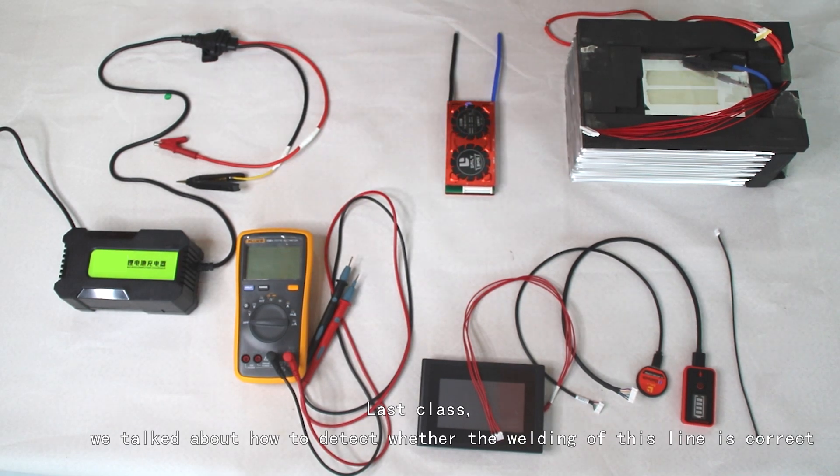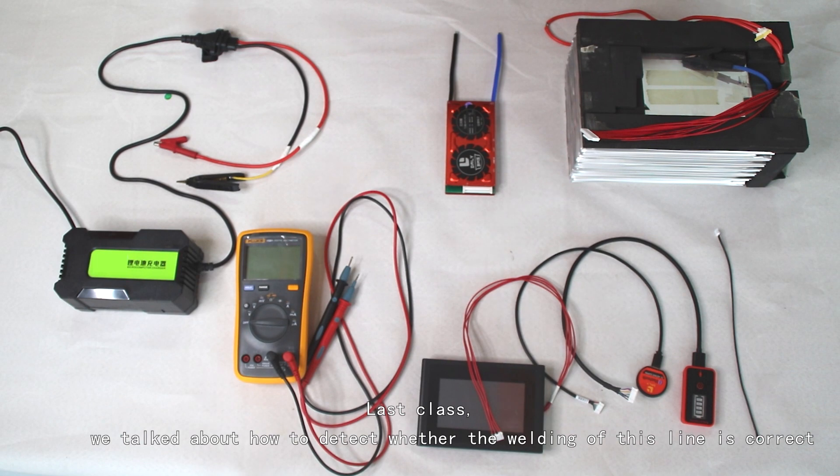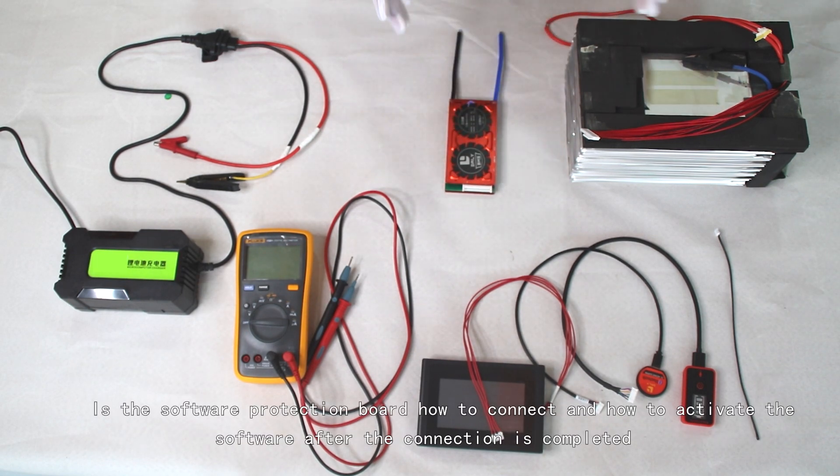Last class we talked about how to detect whether the welding of this line is correct. In this class, we'll cover the software protection board - how to connect and how to activate the software after the connection is completed.